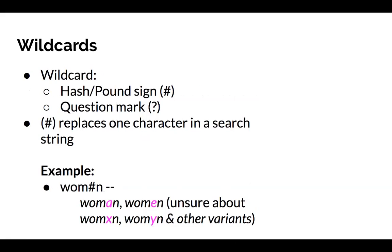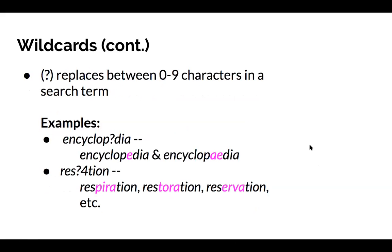There are two symbols used as wildcard operators: the hash or pound sign and the question mark. The hash replaces one character in a search string — for example, 'wom#n' will retrieve both 'woman' and 'women' in the catalog. The question mark replaces between zero and nine characters in the search term. For example, 'encyclop?dia' retrieves two common spellings of encyclopedia. You can also use a number after the question mark, such as '?4', to indicate how many variable characters the system can retrieve, retrieving terms like 'respiration' or 'restoration.'